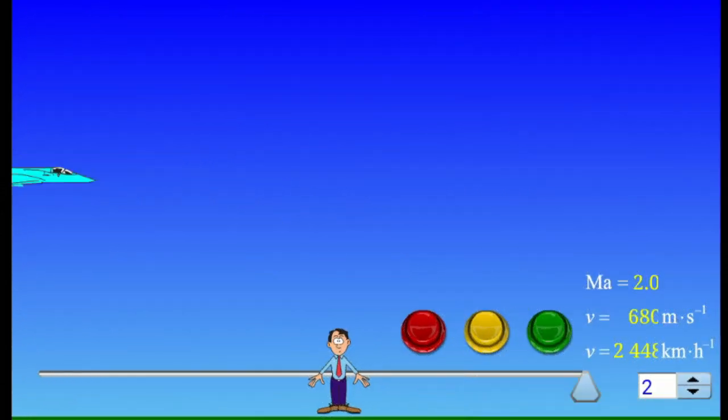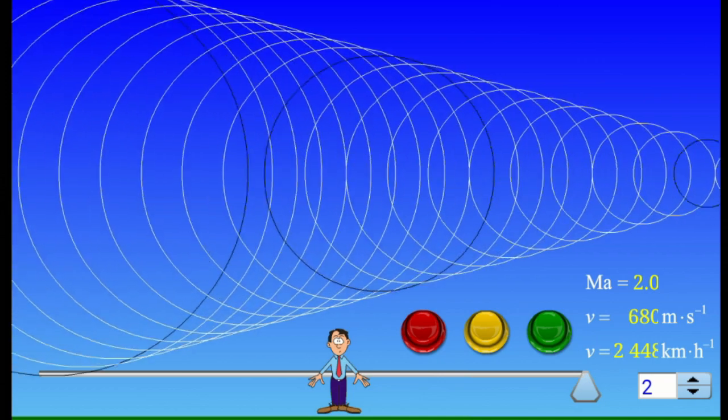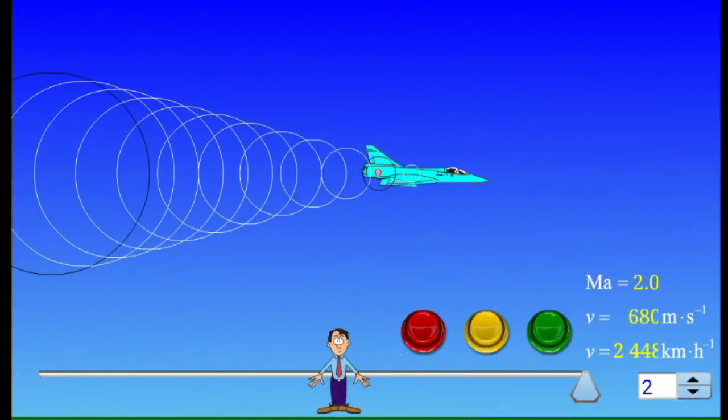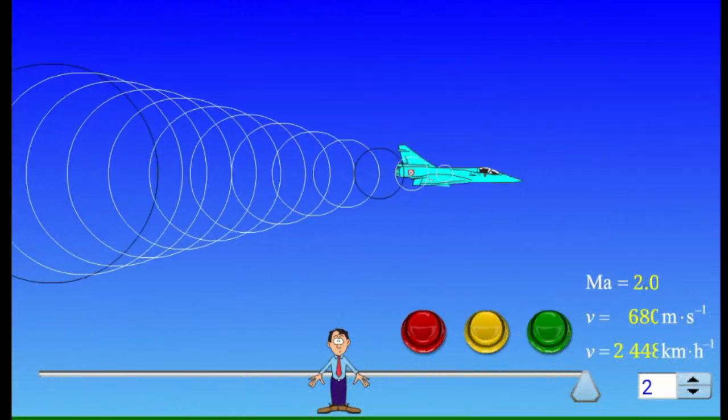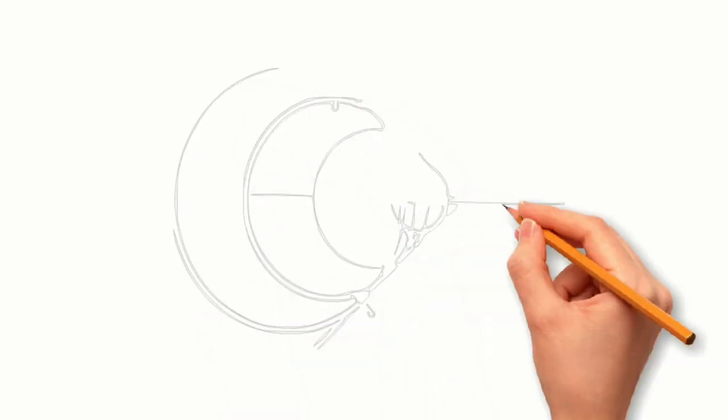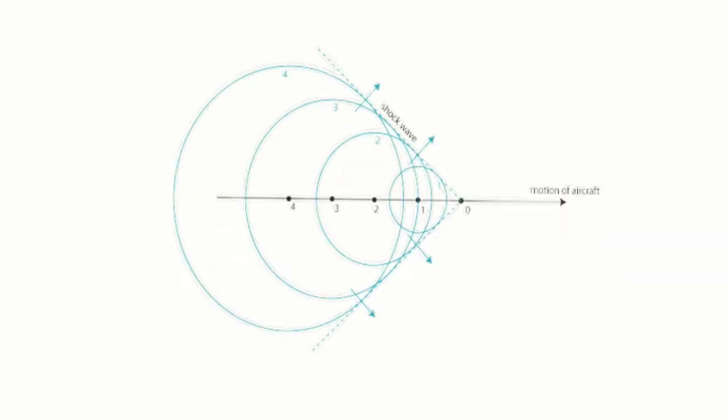When a shock wave reaches an observer, a sonic boom is heard. The airplane flows through the air creating a shock wave. As air flows through the shock wave, its pressure, density, and temperature all increase sharply and abruptly.